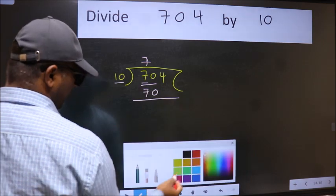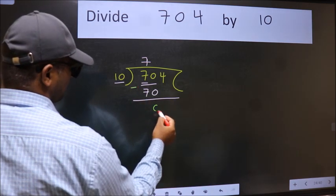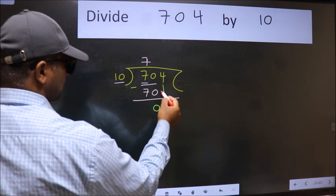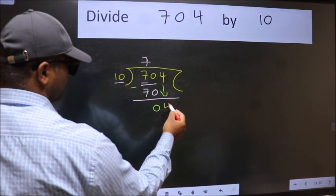Now we should subtract. We get 0. After this bring down the beside number. So 4 down.